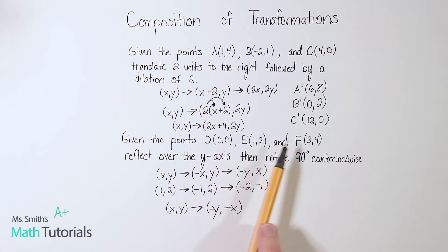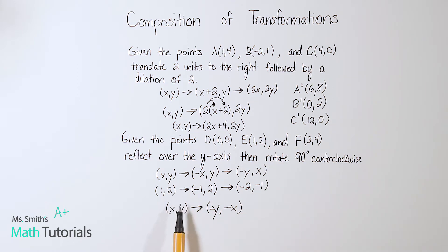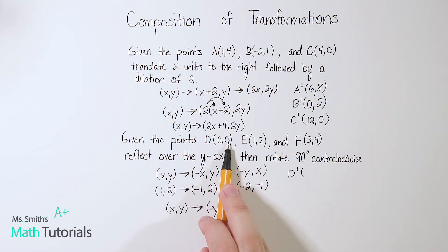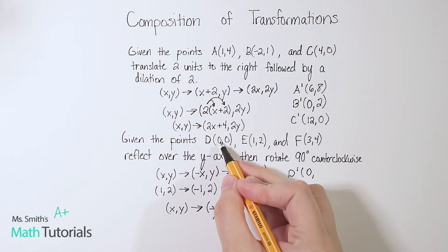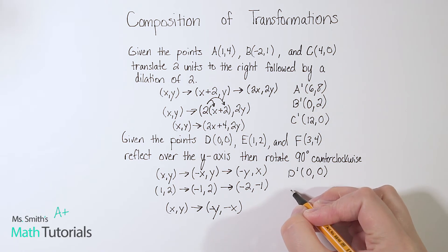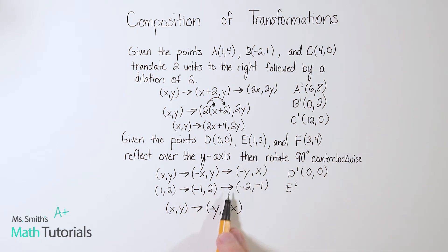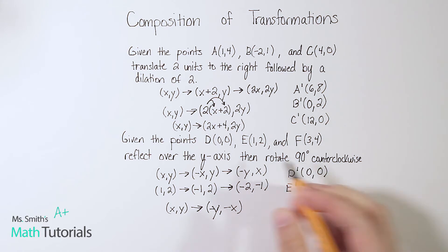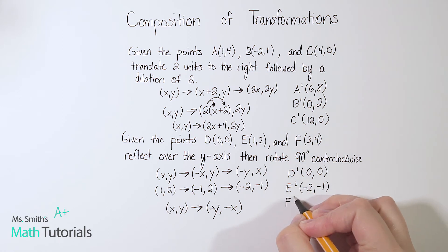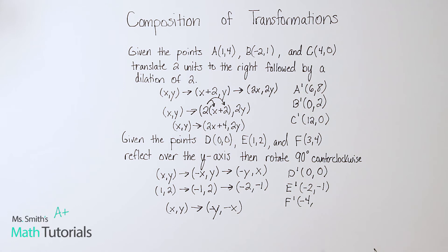They gave us set points, so let's transform each one using this rule. D at (0, 0): bringing the back 0 forward — can't flip the sign of 0 — so D' is (0, 0). E at (1, 2): the 2 comes to the front and becomes negative, the 1 goes to the back and also becomes negative, so E' is (-2, -1). F at (3, 4): the 4 comes to the front and becomes negative, the 3 goes to the back and also becomes negative, so F' is (-4, -3).